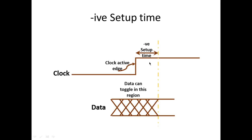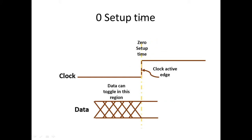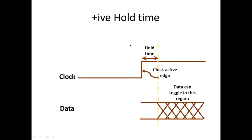Negative setup time is the time required after the rising edge of the clock — the data can change at any interval before that point. Zero setup time means that at the same rising edge of the clock, our data should be stable exactly at the rising edge — neither before nor after — hence it is called zero setup time.